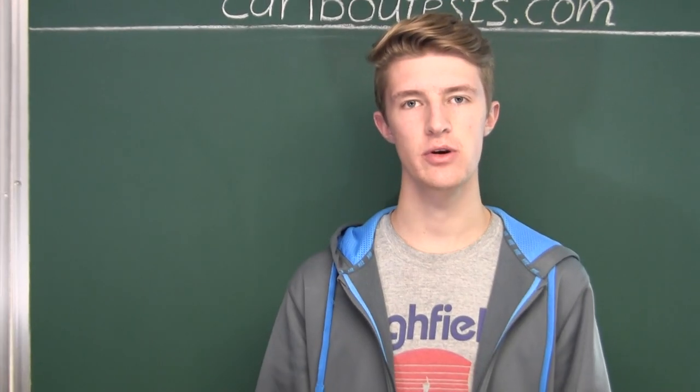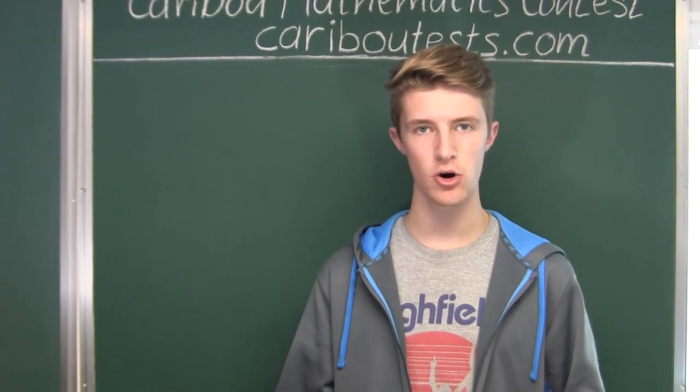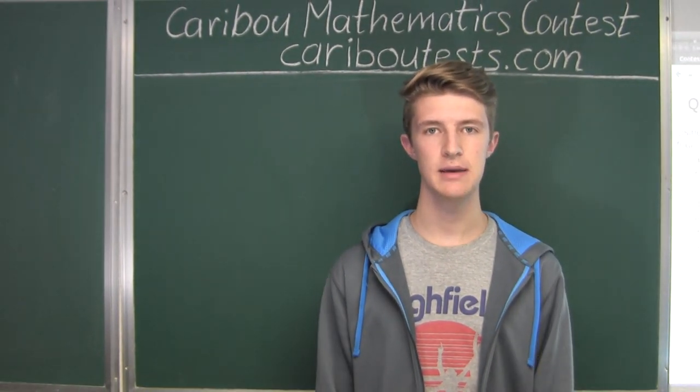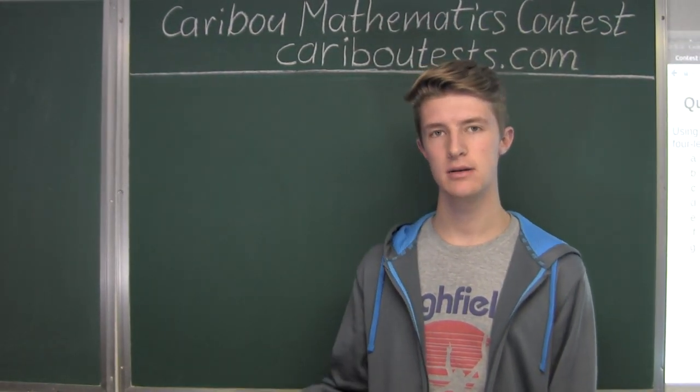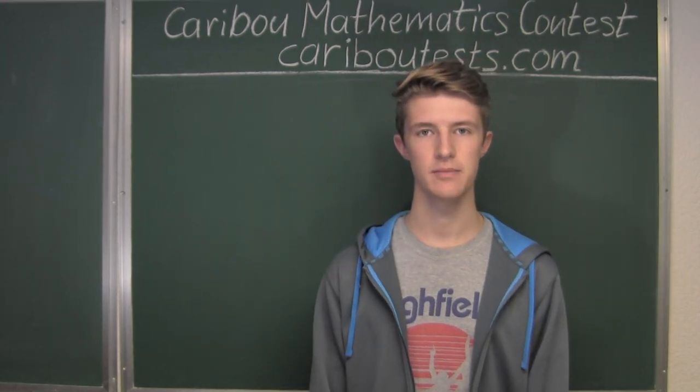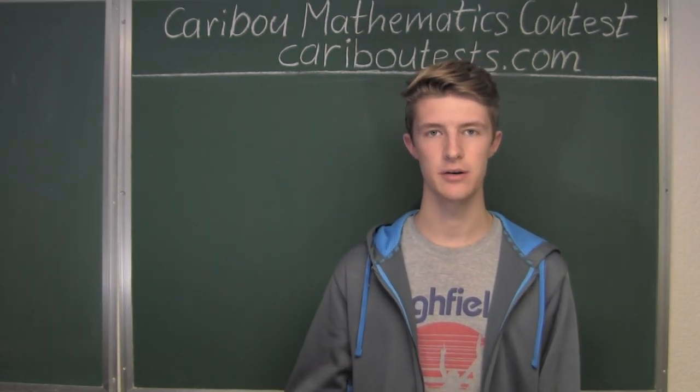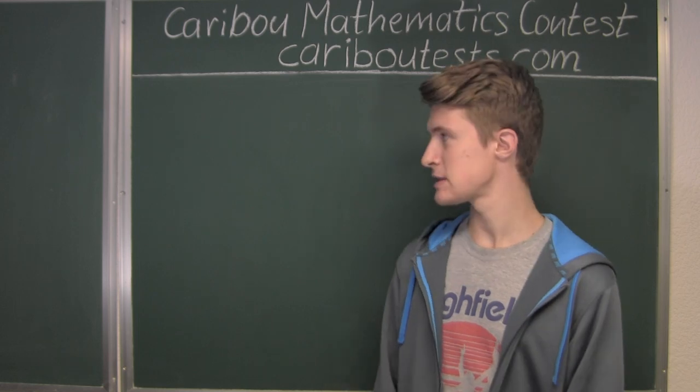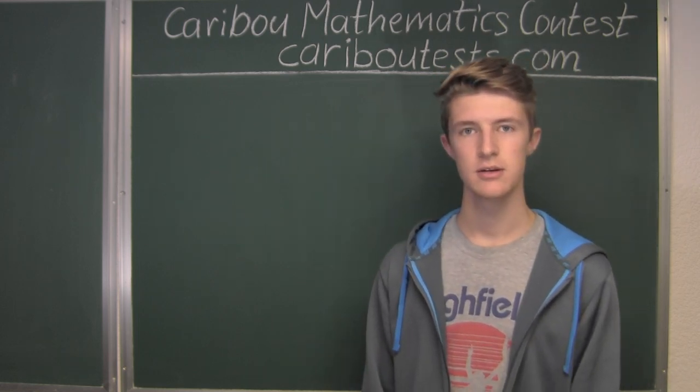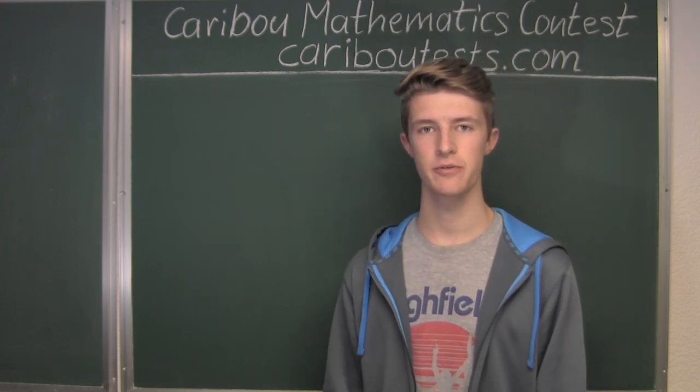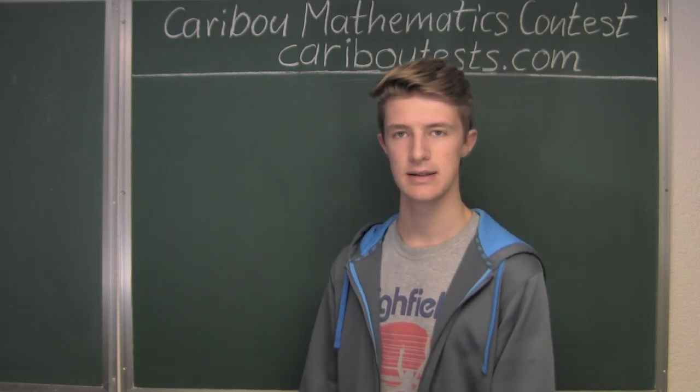Okay, so I'll be showing you how to find all four letter code words using the letters A, B, C, and D by drawing a tree diagram. And I'll be going letter by letter. So let's start off with the first letter. We have four options for the first letter: A, B, C, and D.